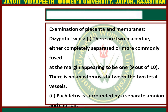First we will talk about the examination of placenta and membranes. In dizygotic twins there are two placentae, either completely separated or more commonly fused at the margin, appearing to be one — this occurs in about 9 out of 10 cases. There is no anastomosis between the two fetal vessels. Each fetus is surrounded by a separate amnion and chorion.